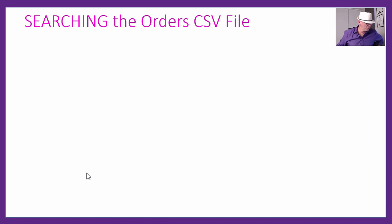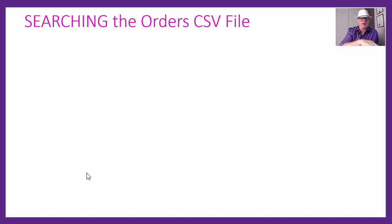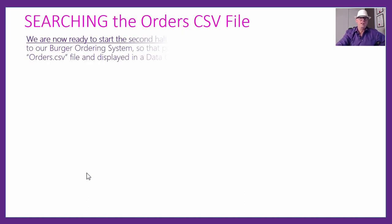We're about 25 minutes in, with roughly another 25-30 minutes to go. This is really two lessons in one — you can pause here if you've learned enough about saving DataGridView data to a CSV file. In the video timeline index in the description, you can find the exact spot where the searching section begins, so you can come back to it later.